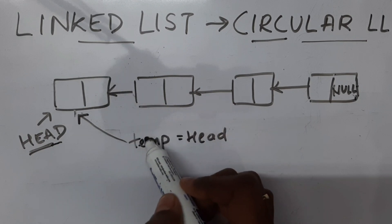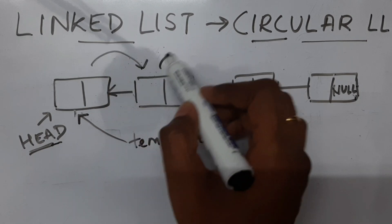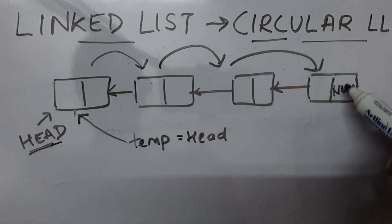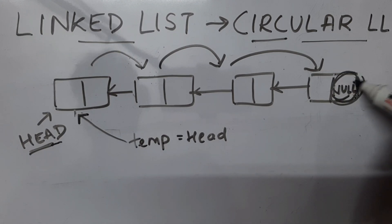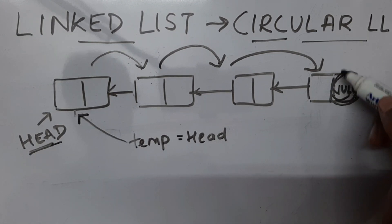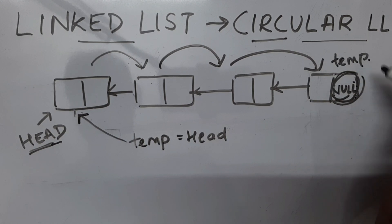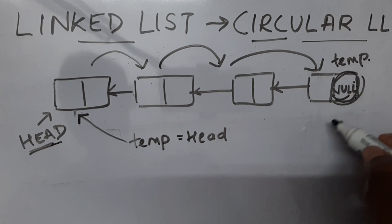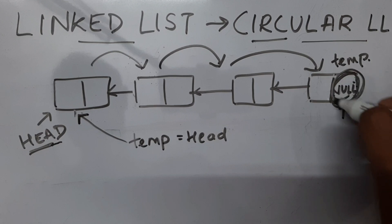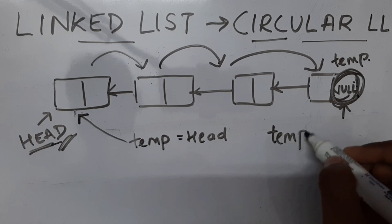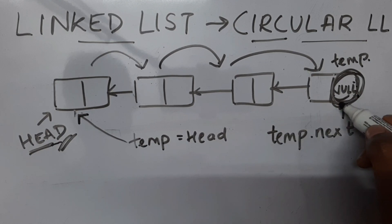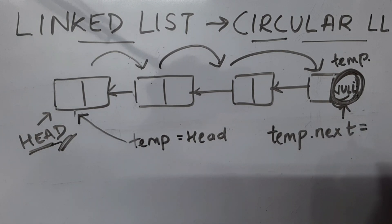Now I'm going to make temp traverse from one node to the other until it finds a node which has null in the address part. When I find such a node, I'm going to stop the loop. So temp will be pointing to the last node. When I reach the last node, I'm going to say this part should now hold the address of the first node — I'll say temp.next will now have the address of head.